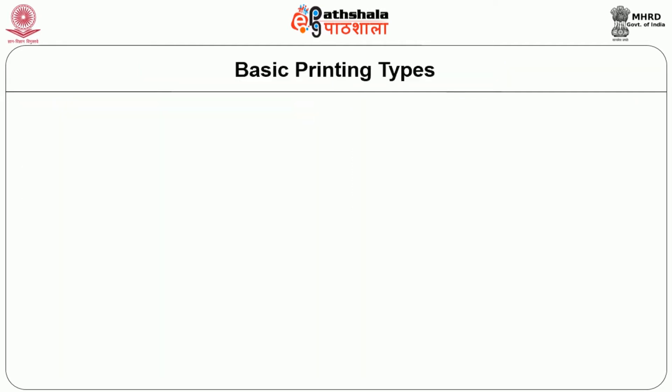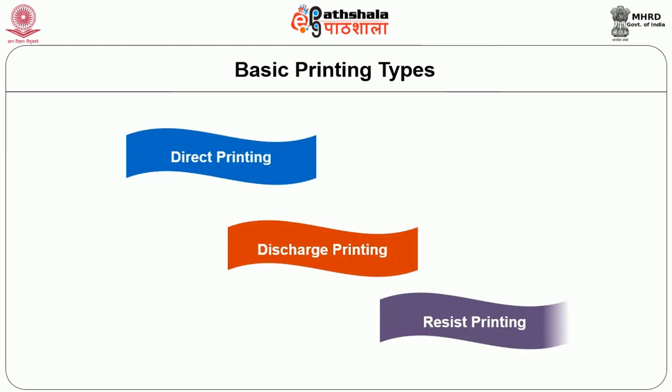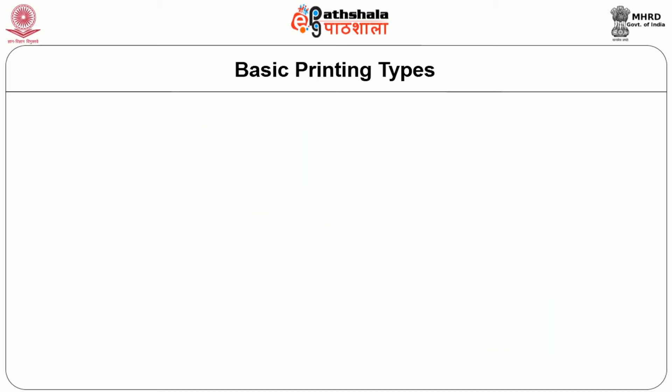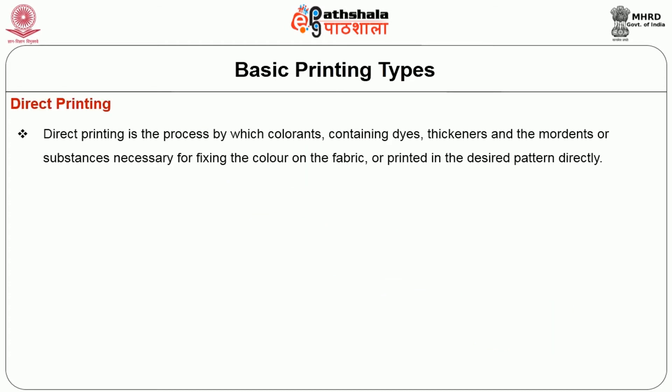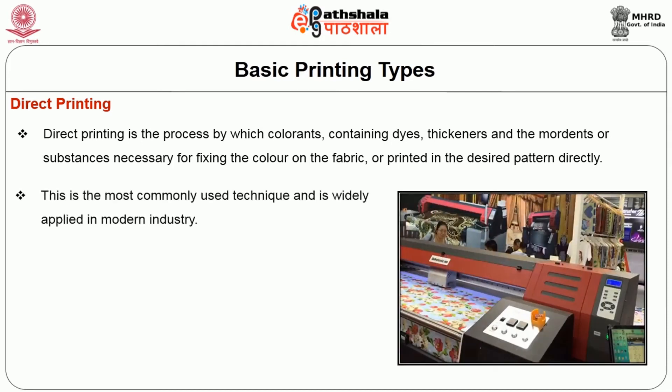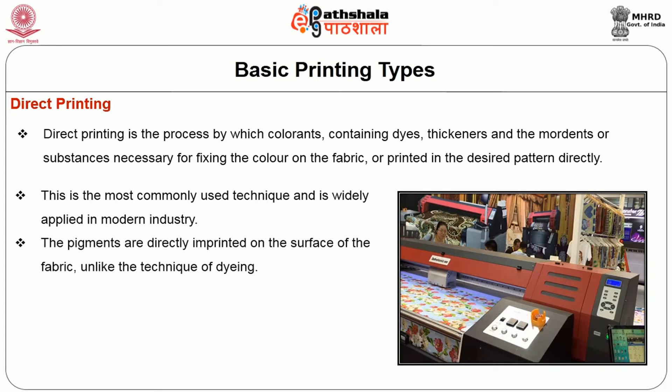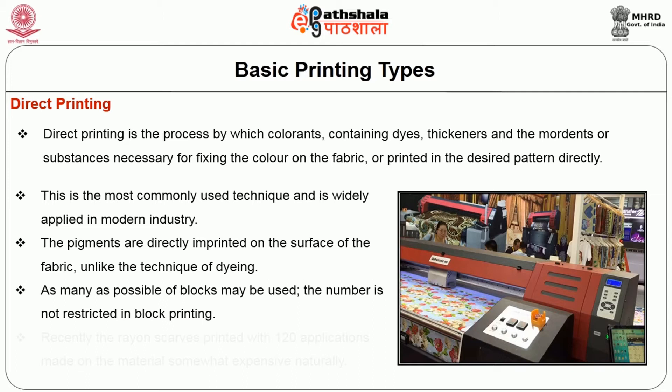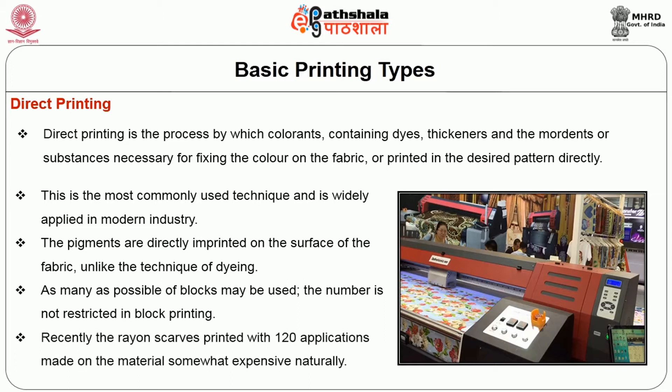Now we see the basic printing types, which are divided into three major groups: direct printing, discharge printing, and resist printing. Direct printing is a process by which colorants containing dyes, thickeners, and mordants — substances necessary for fixing the color — are printed in the desired pattern directly on the fabric. This is the most commonly used technique, widely applied in modern industry. Pigments or blocks may be used; the number is not restricted in block printing.